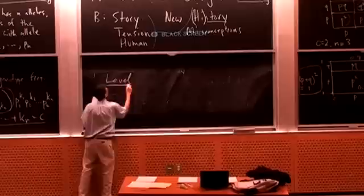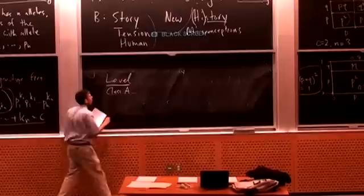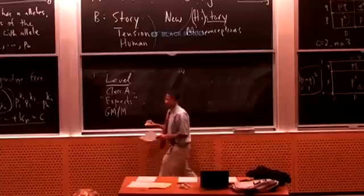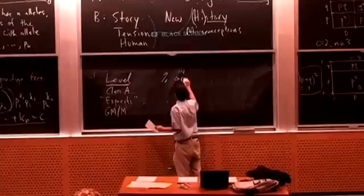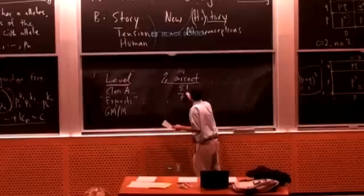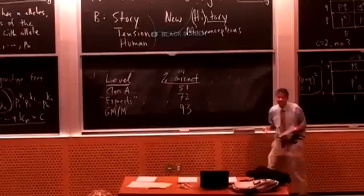The results are striking. Class A strong tournament players got 51% of pieces correct in reconstruction. Experts got 72%. Grandmasters and masters got 93%. So the level of chess ability dramatically predicts how accurately you can reconstruct a position from just four to five seconds of viewing.